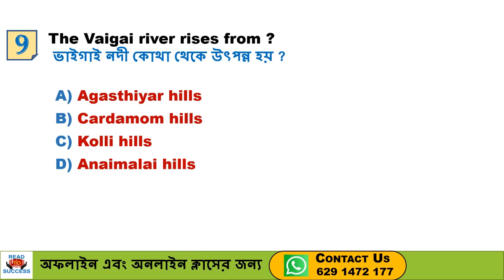Next question: The Vaigai river rises from — Option A. Agasthiar hills, Option B. Cardamom hills, Option C. Kulli hills, Option D. Anaimalai hills. Option B, Cardamom hills, is the correct answer.